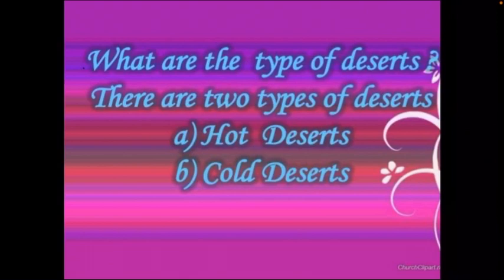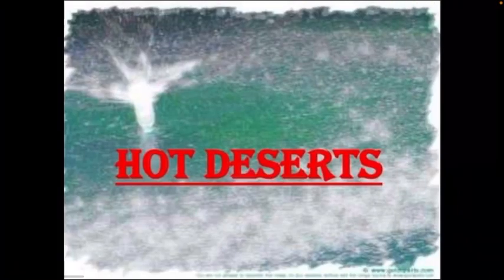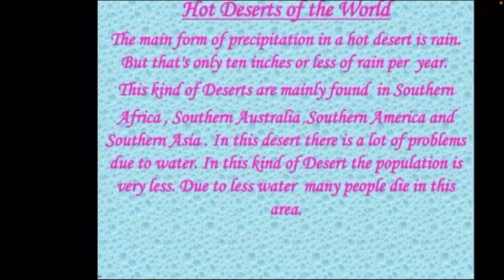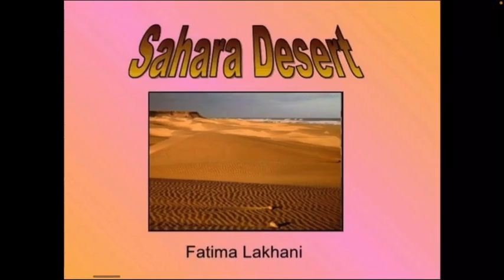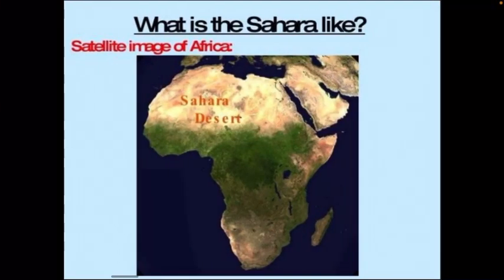The Sahara Desert is the largest desert in the world with an area of about 8.54 million square kilometres. It covers almost the whole of North Africa. It spreads out over 5,500 kilometres from east to west and 1,900 kilometres from north to south.